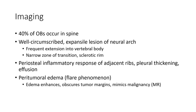Imaging: 40% of osteoblastoma occurs in the spine, where it presents as a circumscribed lesion with frequent extension into the vertebral body and a narrow zone of transition with a sclerotic ring. There is a very hostile inflammatory response of adjacent soft tissue, pleural thickening, and fueling. Periosteal tumor edema, the flair phenomena — edema-enhanced obscures and mimics malignancy.